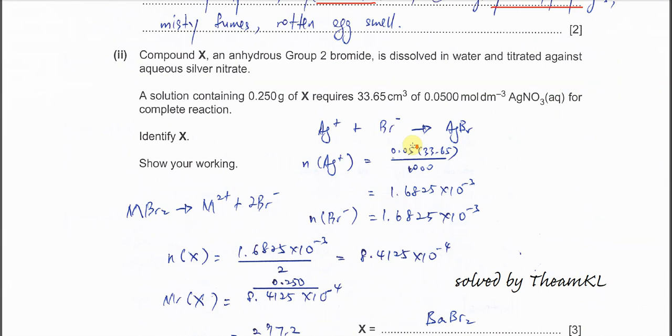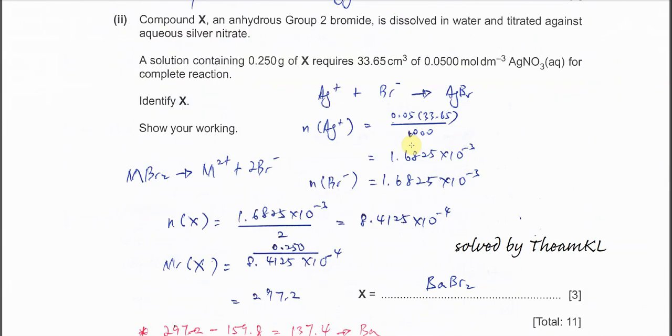Part D(ii). This calculation you need to know the mole ratio. Compound X is an anhydrous Group 2 bromide. It can be magnesium bromide, calcium bromide, or barium bromide. This one can dissolve in water and will form a precipitate with silver nitrate.